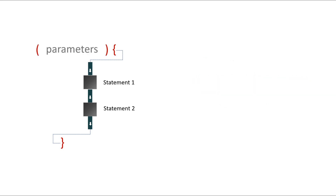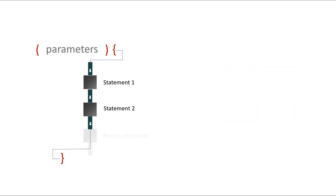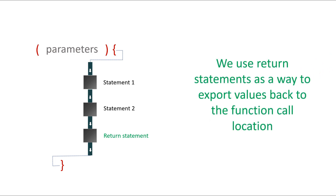Something else that functions have are parameters. Parameters allow us to send values to the function which we can then process and control inside of it. So we use parameters as a way to import external values into the function during a function call. Another thing that a function has, which is very useful, is a way to communicate back to the outside world — and this is what we use return statements for. Return statements allow us to send values back to the caller location, so we use them as a way to export values back to the function call location.